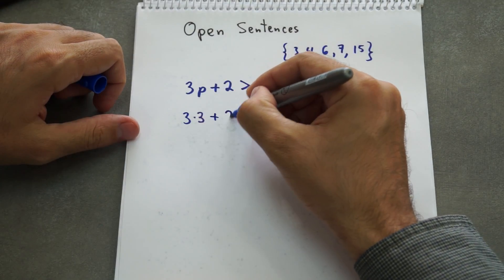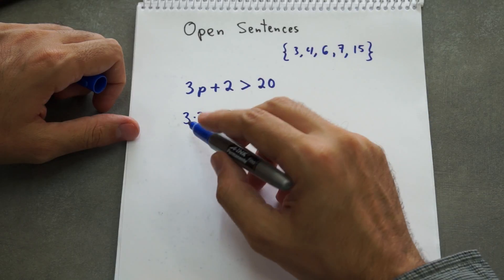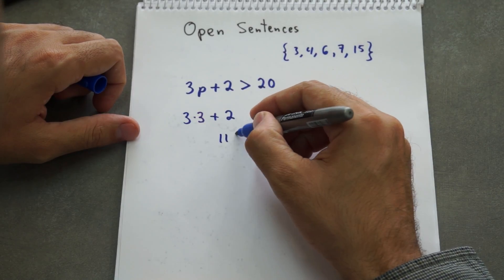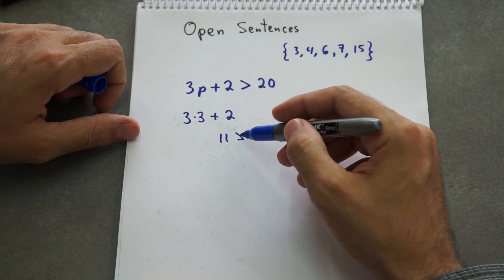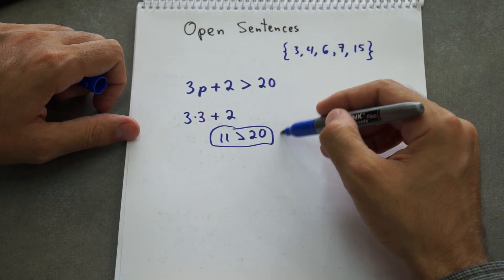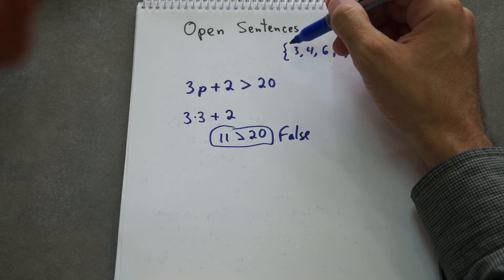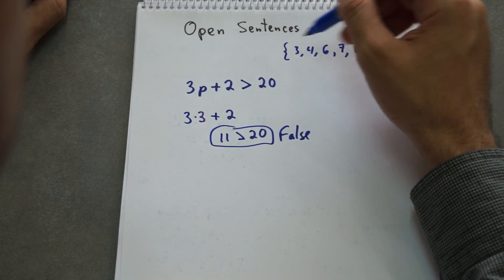And we will check if it's greater than 20 or not. So 3 times 3 is 9 plus 2 is 11. 11 greater than 20, so this is false. If it's false, that means that 3 does not belong to this set.